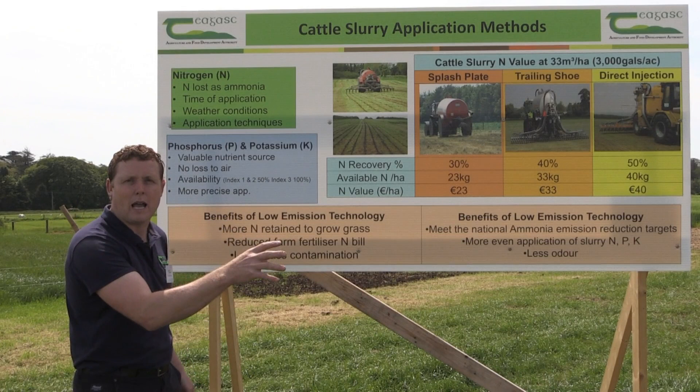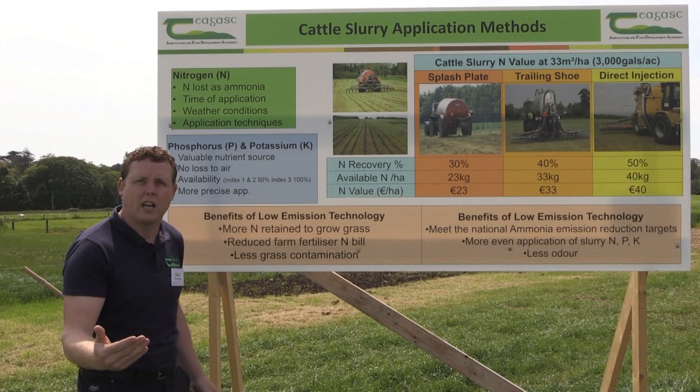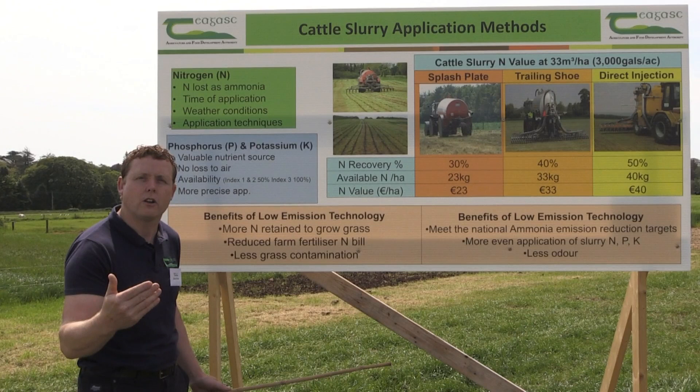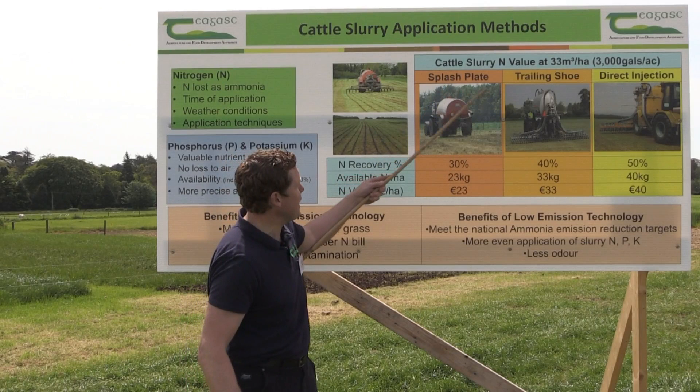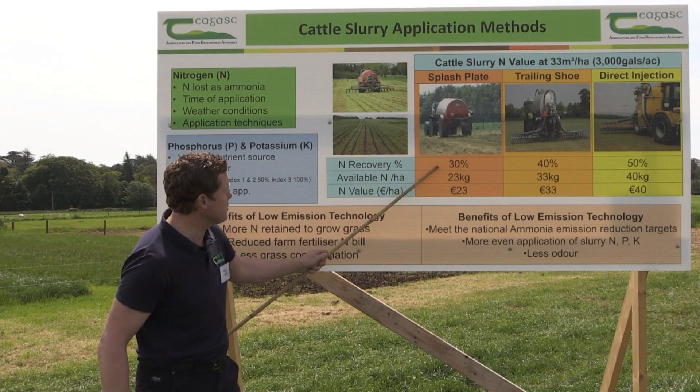Slurry application methods: beside us we have the trailing shoe, which is a low emission slurry spreading application method, and beside that we have the trailing hose, which is another low emission slurry spreading application method and an alternative to the splash plate. In terms of the three application methods — splash plate, trailing shoe and direct injection — the nitrogen recovery is much higher on the direct injection and the low emission slurry spreading method compared with the splash plate.